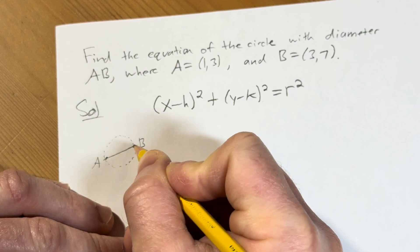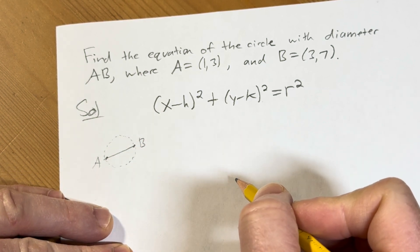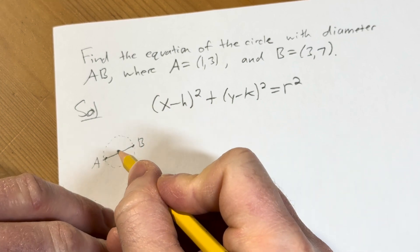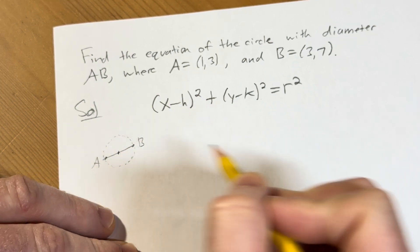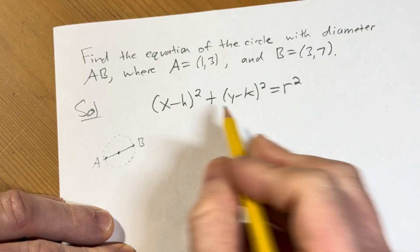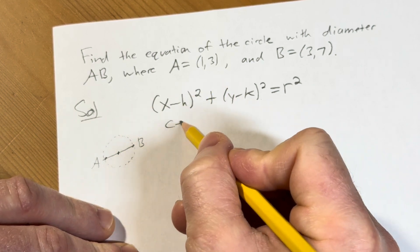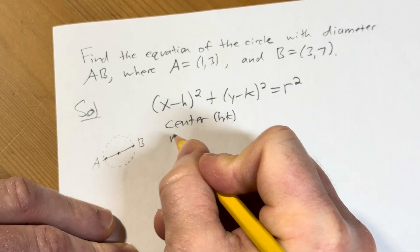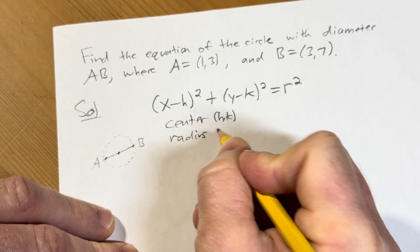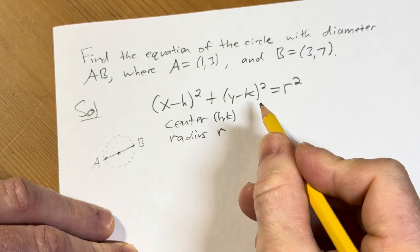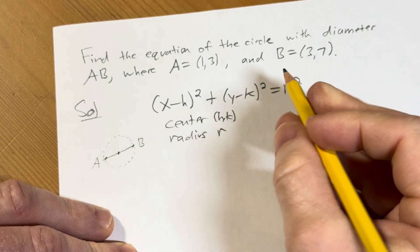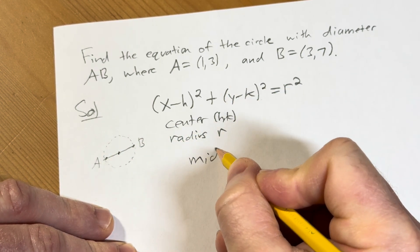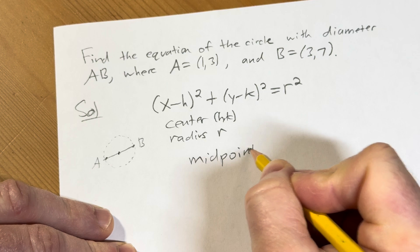You can see that that's the diameter of the circle, right? And so at the very middle, we have what's called the center of the circle. So the center here in this formula is (h,k) and the radius is r. So in our particular case, the center is going to be the midpoint.